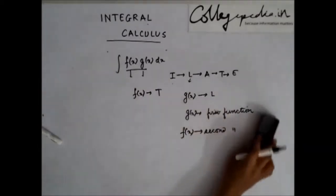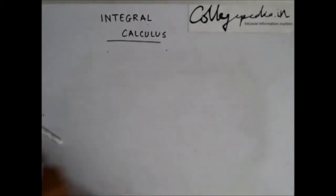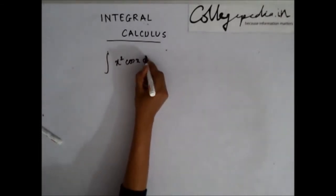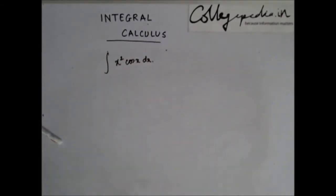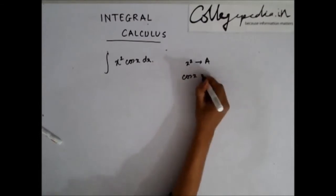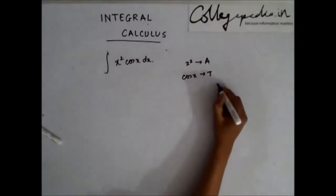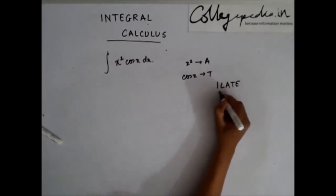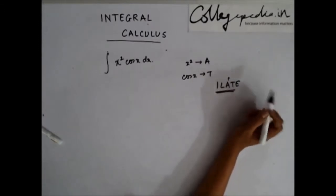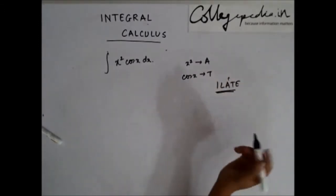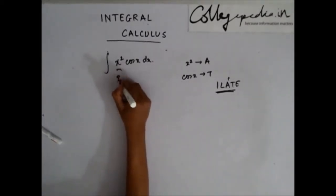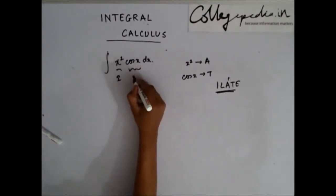Let's take an example using this method. Let's say we have been asked to integrate x² cos(x) dx. In this case, x² is an algebraic function and cos(x) is a trigonometric function. Looking at the ILATE order, A comes before T, so x² becomes the first function and cos(x) becomes the second function.